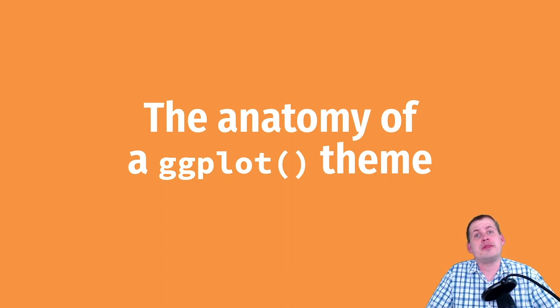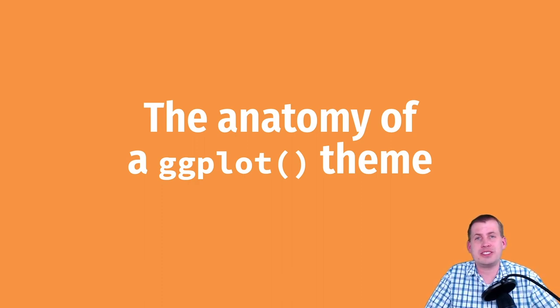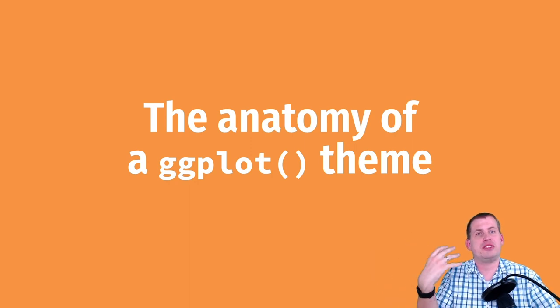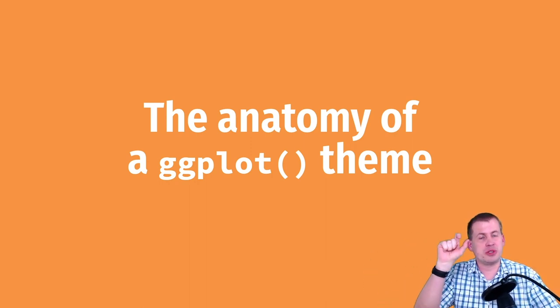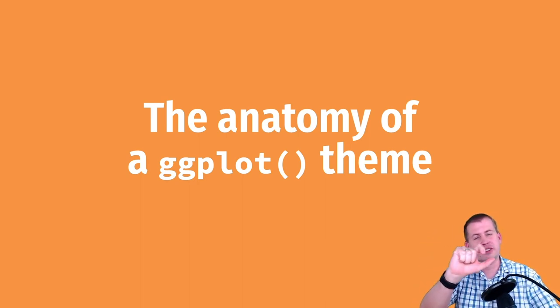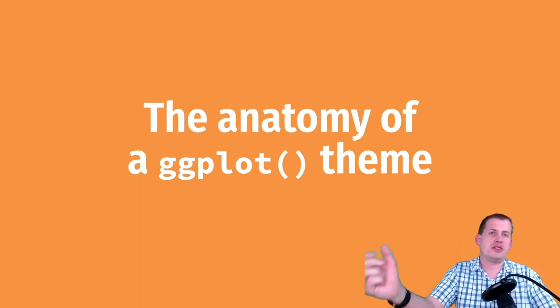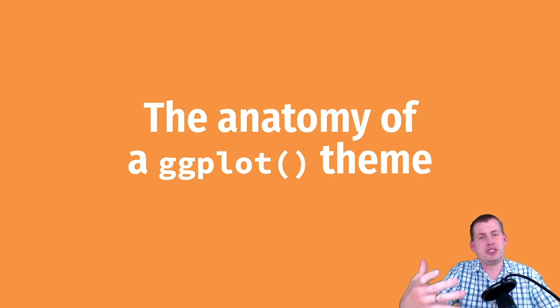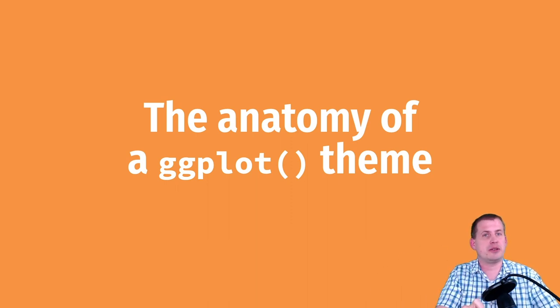To understand how the theme function works, we need to first understand the different elements of ggplot plots. So far we've been working with geoms, mapping data to specific axes, fills, or scales. But the actual plot on the screen has lots of little elements, and using the theme function we can target those elements and adjust them, change them, or turn them off completely.